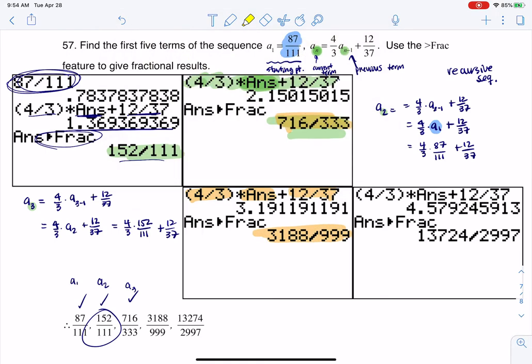Right, if I want to find A sub 5, take 4 thirds what you previously got. Well, I'm going to put in the 3188 over 999, add 12 over 37 to it. There we go, turn it into a fraction, and there is my solution.